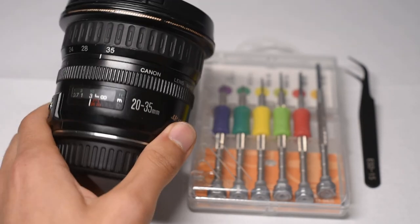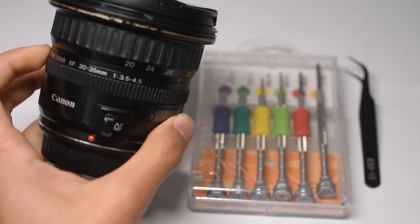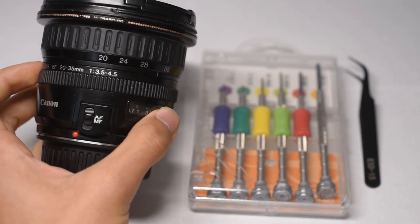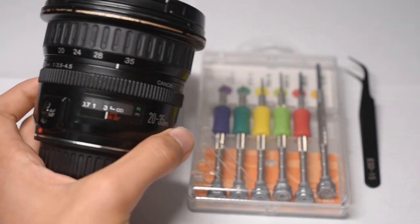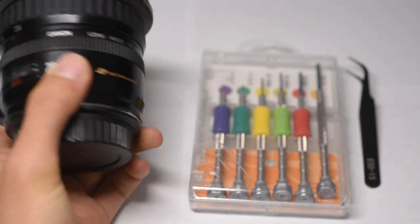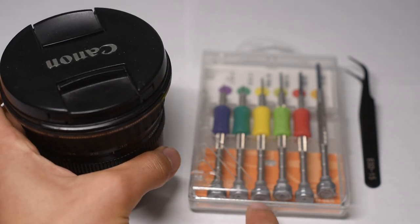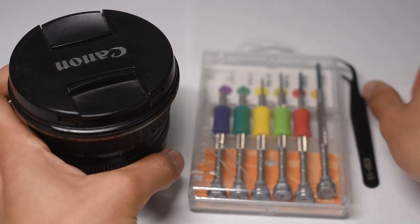So if your Canon 20-35mm f/3.5-4.5 lens can't autofocus or manual focus, then this video is for you. I'll be taking apart and showing you how to fix it. All you need is a set of JIS screwdrivers and some tweezers.